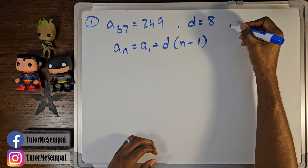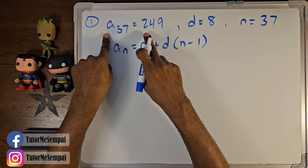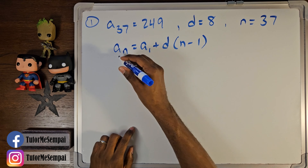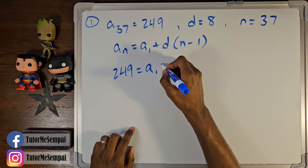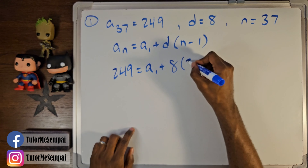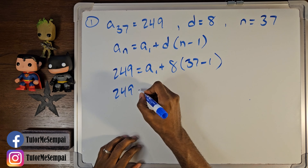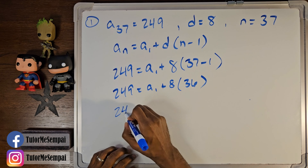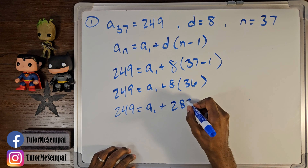The very next thing you want to do is plug in what you know. We also know that our n is going to be 37, since our aₙ here was a₃₇. So we're going to plug in everything we know: aₙ is going to be 249, we don't know what a₁ is, we're going to add our d which is 8, and we know that n is 37, so 37 minus 1. You can simplify this: 249 equals a₁ plus 8 times 36, which gives us 249 equals a₁ plus 288.